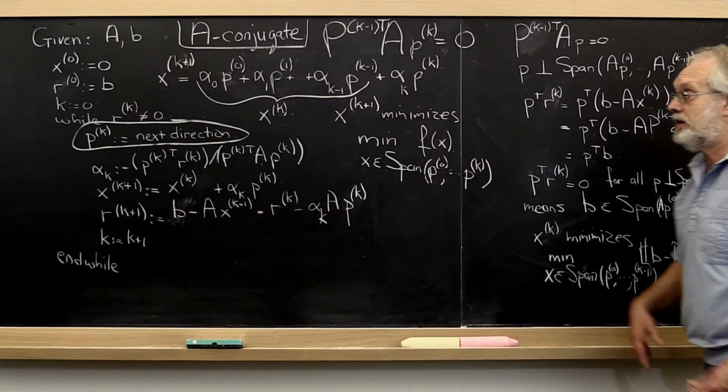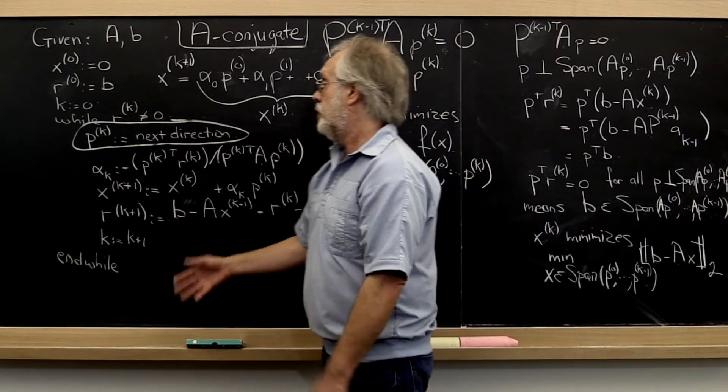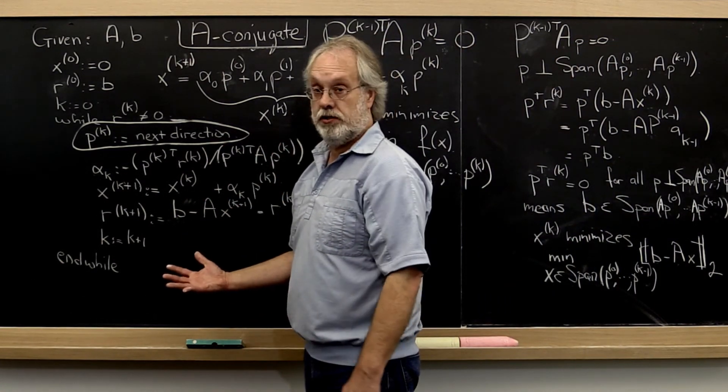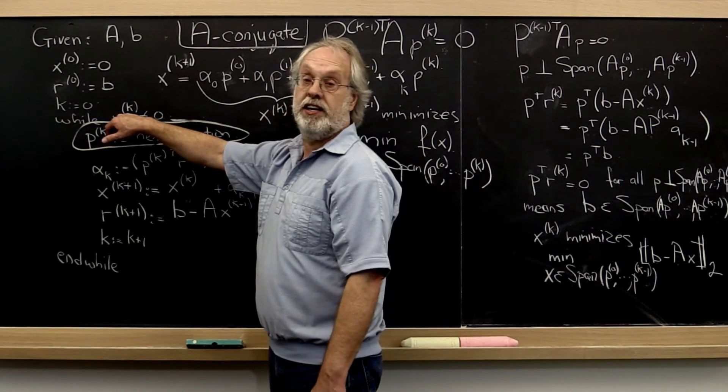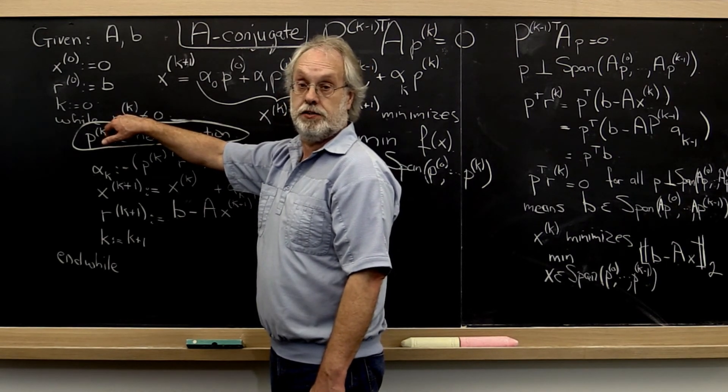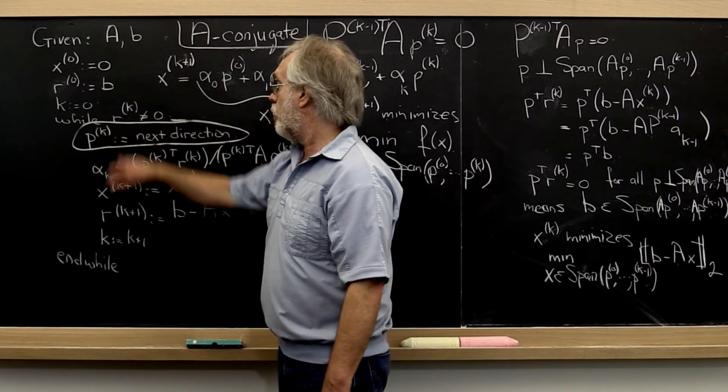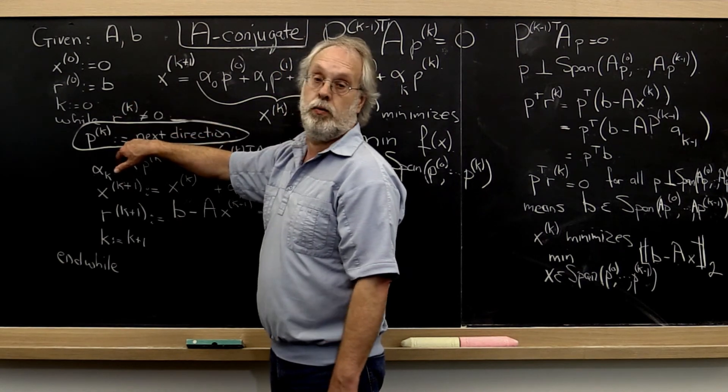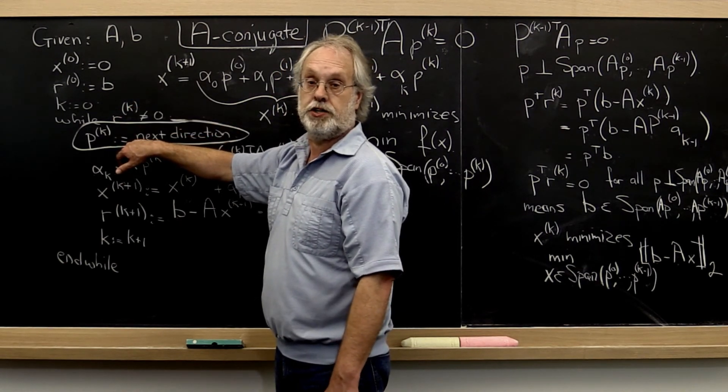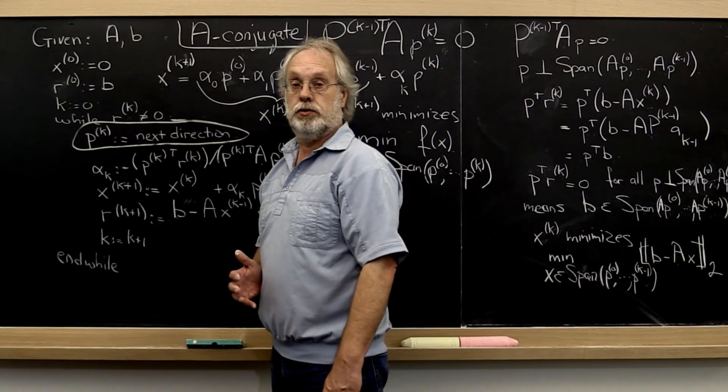And what does that mean? That means that in the previous iteration we actually had found our solution. It means that Rk therefore is actually the zero vector because it's the residual. And therefore we never would have gotten to the point where we needed to pick a new search direction because we already have found our solution.